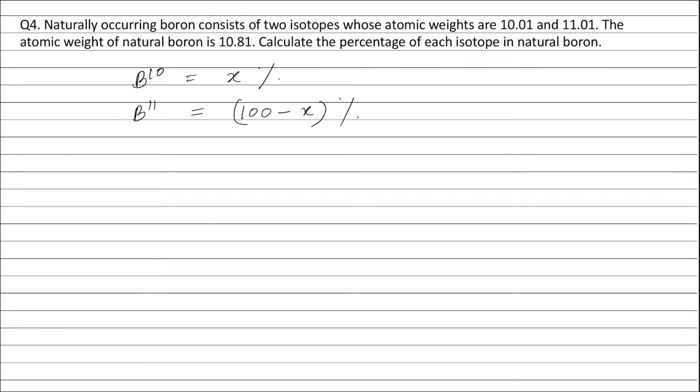Therefore, atomic weight of natural boron will be equal to 10.01 into x plus 11.01 into 100 minus x divided by 100, and this is equal to 10.81.